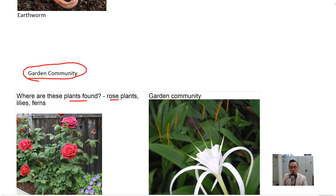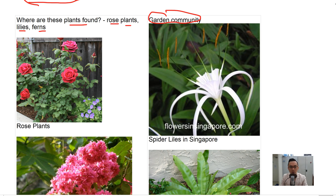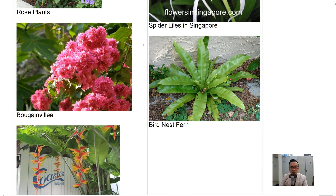Plants found in the garden community include rose plants, lilies, and ferns. These are rose plants — you can see a lot of thorns on the stem. This is a spider lily, very common in Singapore. These are bougainvilleas, which are pink in color and also very common. This is a bird nest fern, one of the most common ferns in Singapore, often found growing under trees in the shade.